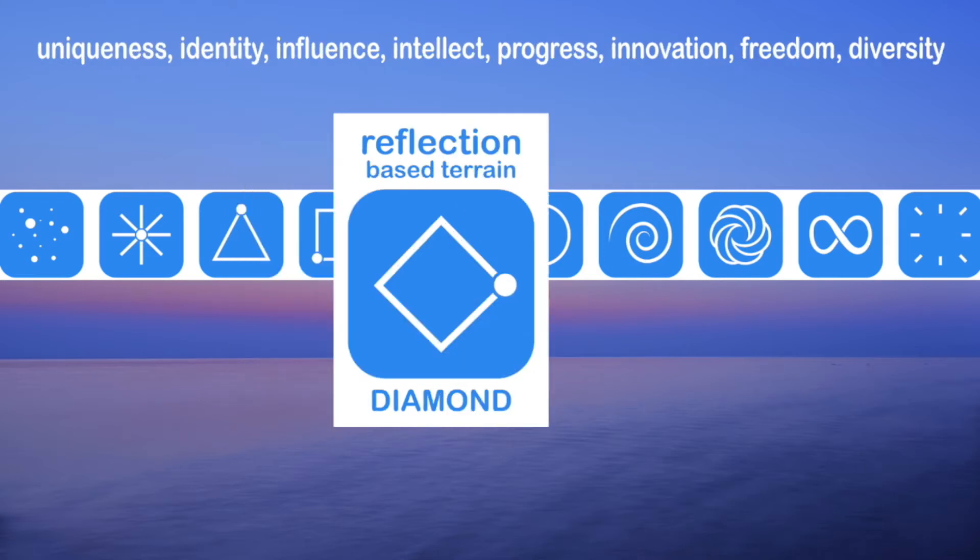And then we've got the reflection-based terrain diamond where the shift is people start to realize, I control my own reality, I'm in charge of my identity, and they start to innovate and create. And the human mind is what keeps them safe and creativity and ingenuity.